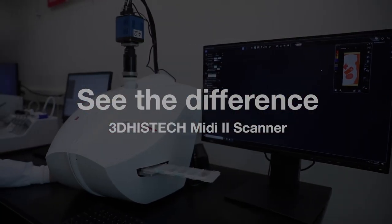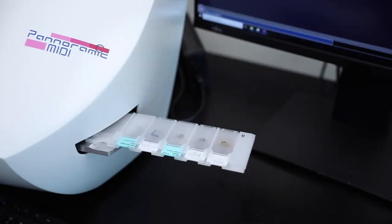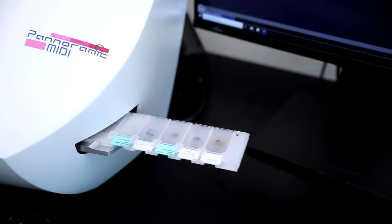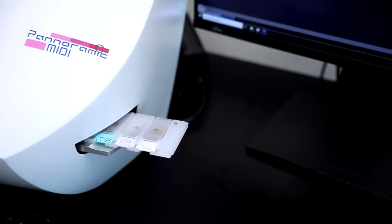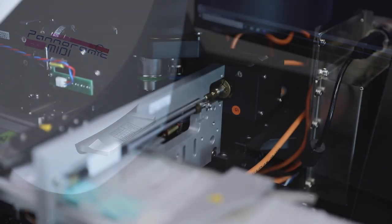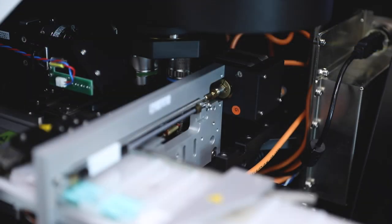With the MIDI 2 scanner from 3D HISTEC, you can capture fluorescent whole slide images in minutes. Slides are loaded on the MIDI on a 12-slide tray that offers users the ability to image up to 12 slides at a time.